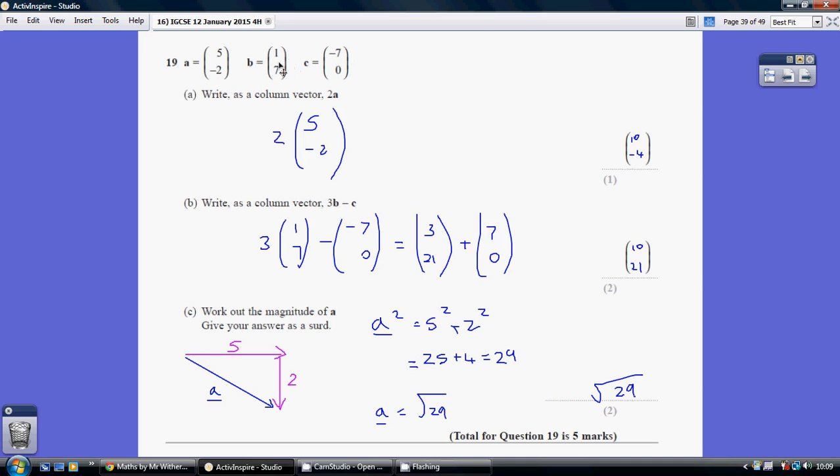So 3 lots of B - well that's 3 lots of this, so 3 ones are 3, 3 sevens are 21, and then we're taking away C. So we're minusing a minus 7 and minusing a 0.